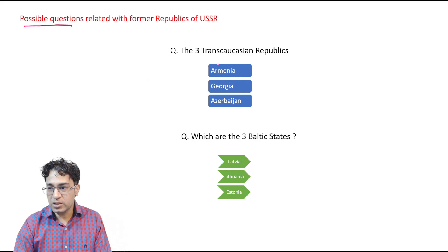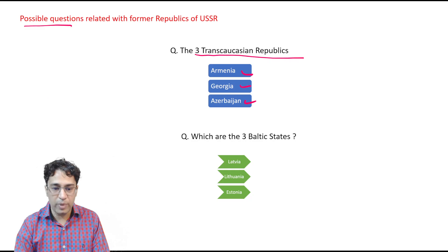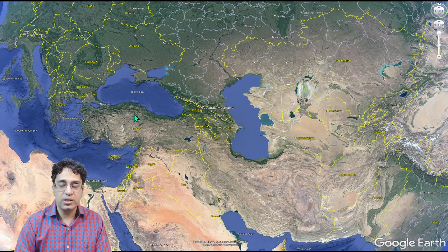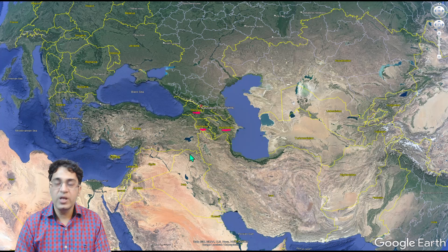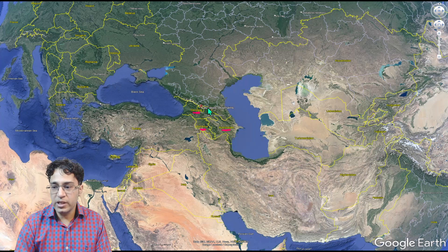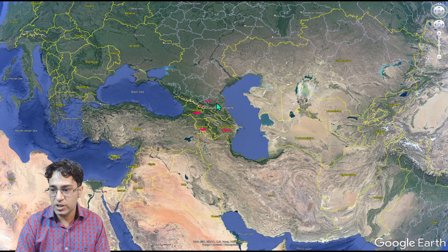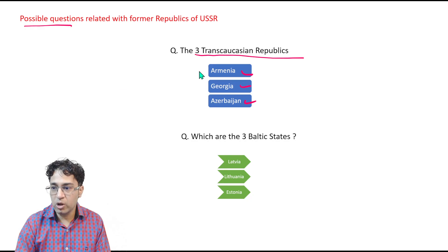Looking at these three countries — Armenia, Georgia, and Azerbaijan — these were called the three Trans-Caucasian Republics. On the map, this is Georgia, this is Armenia, and this is Azerbaijan. They were called the Trans-Caucasian Republics because they were separated from Russia by the Caucasus Mountains.